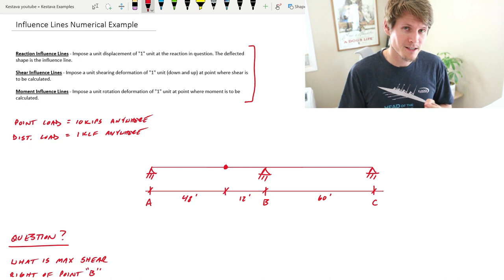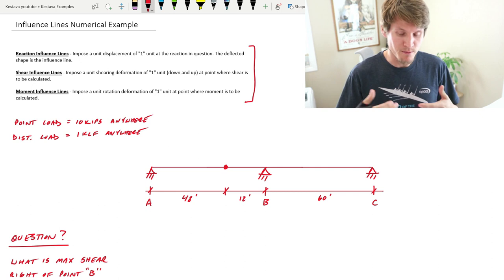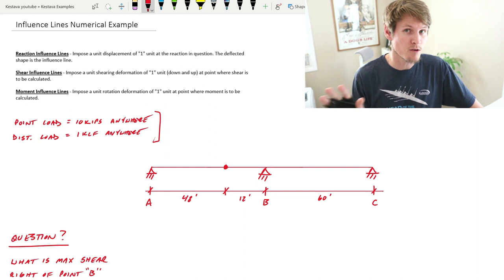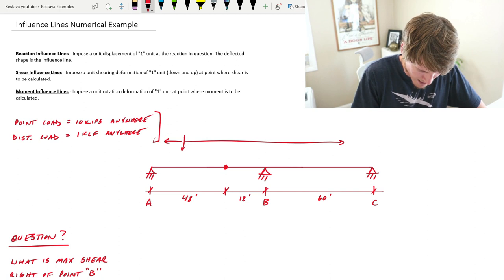Now we're here with another example problem, a numerical one where we're applying loads like we would in real life and we're going to get numerical values for answers. We have our loading right here. We have a point load of 10 kips anywhere along this two-span member that could theoretically be placed that we need to design for.